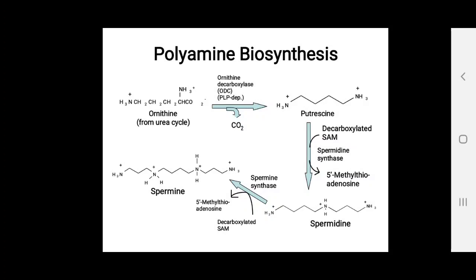Polyamines are synthesized from ornithine: in the presence of ornithine decarboxylase, ornithine forms putrescine. Then, by decarboxylase and spermidine synthase, it forms spermidine. From spermidine, by spermine synthase, spermine is formed.